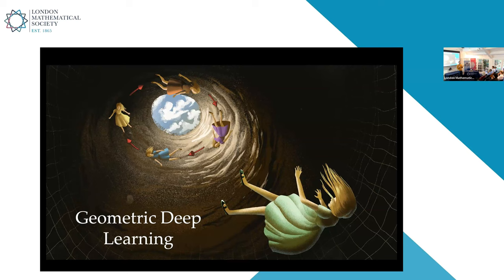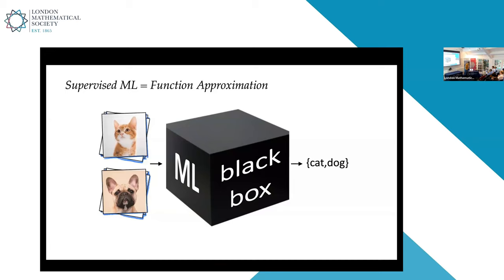We want to bring geometric foundations that allow deriving existing architectures from first principles, as well as inventing new architectures for new problems. In supervised machine learning, we have some input space — say images of cats and dogs — and we want to apply some function to produce binary labels. This is a high-dimensional function approximation problem. Some people cynically say deep learning is just glorified curve fitting, which is probably true to some extent. A candidate considered since the late 1950s is neural networks, like the perceptron introduced by Rosenblatt in 1957.